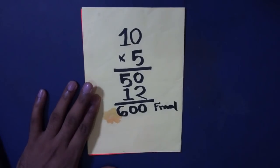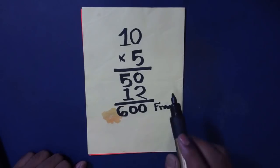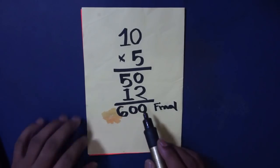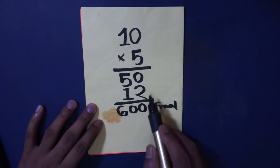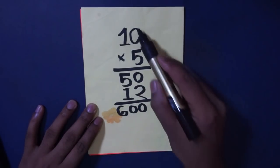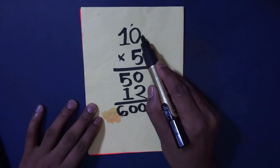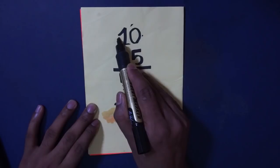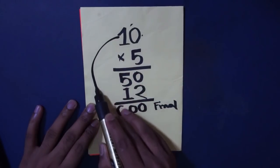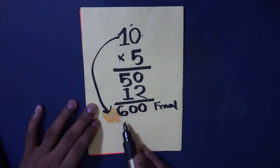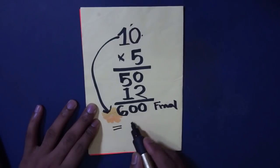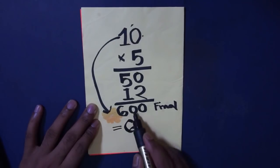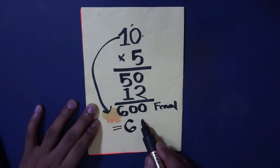When the final result is done, as a magician you tell them: can you divide the final result by your mind number? The mind number is the one they chose — I don't know it. So if 600 is divided by 10, the result will be 60.